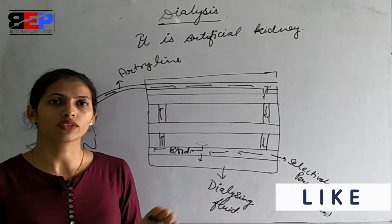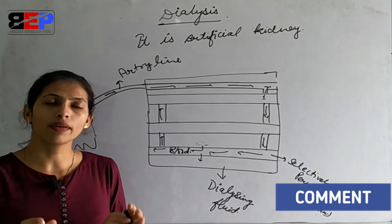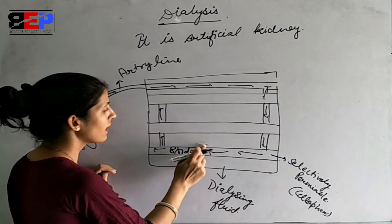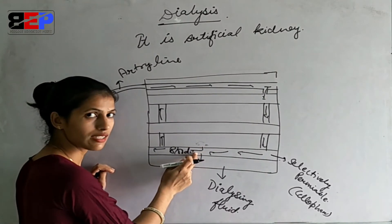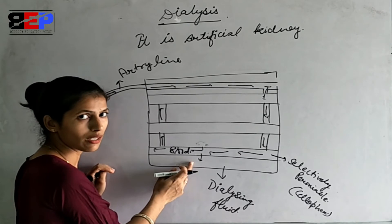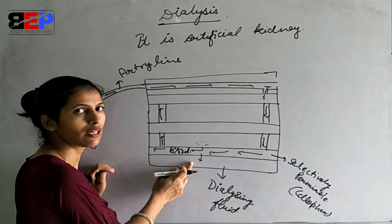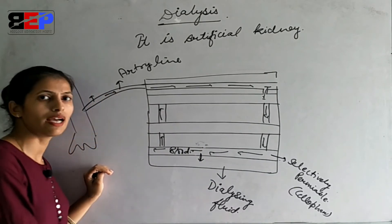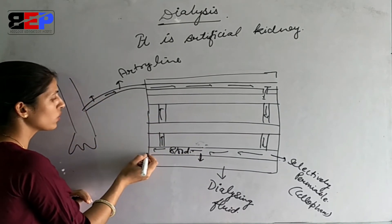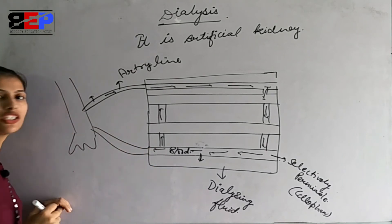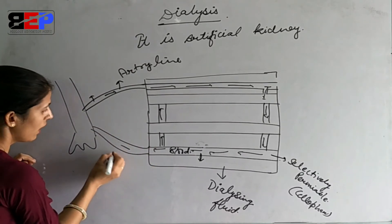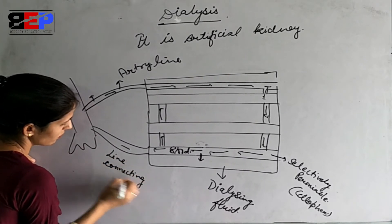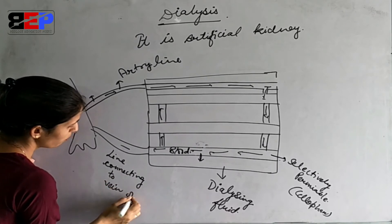Diffusion is a process in which particles move from an area of higher concentration to an area of lower concentration. The concentration of metabolic waste is higher in the blood, whereas in the dialyzing solution there is no metabolic waste — it is like normal blood. So the metabolic waste moves into the dialyzing solution, which is then connected back to the patient's vein.